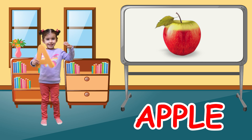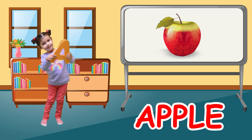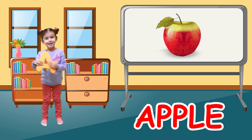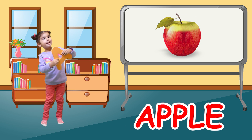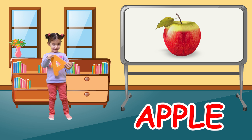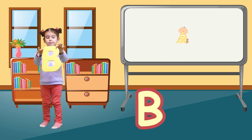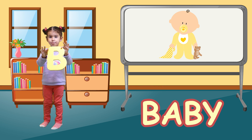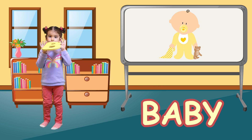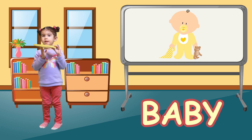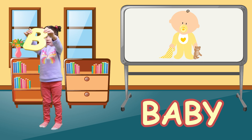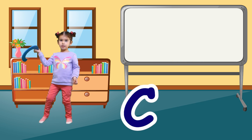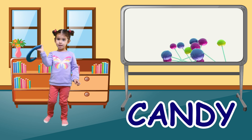A is for apple. A, apple, A, apple, A, apple. B is for baby. B, baby, B, baby, B, baby.